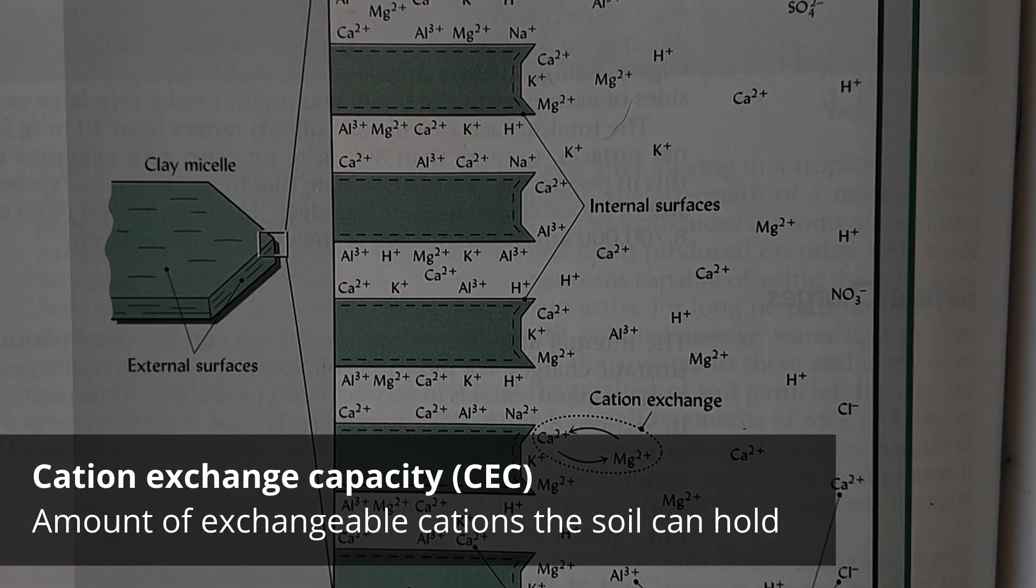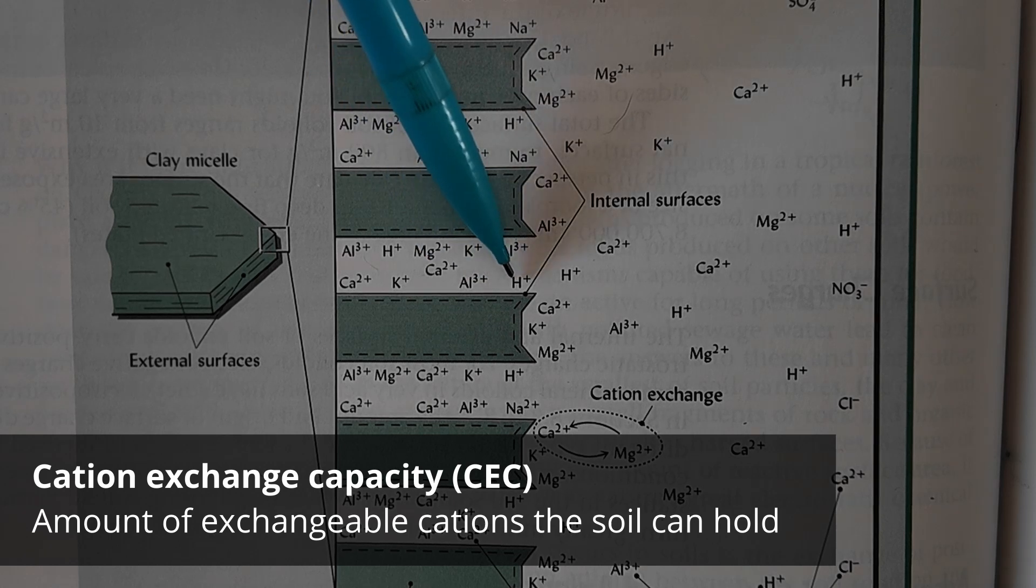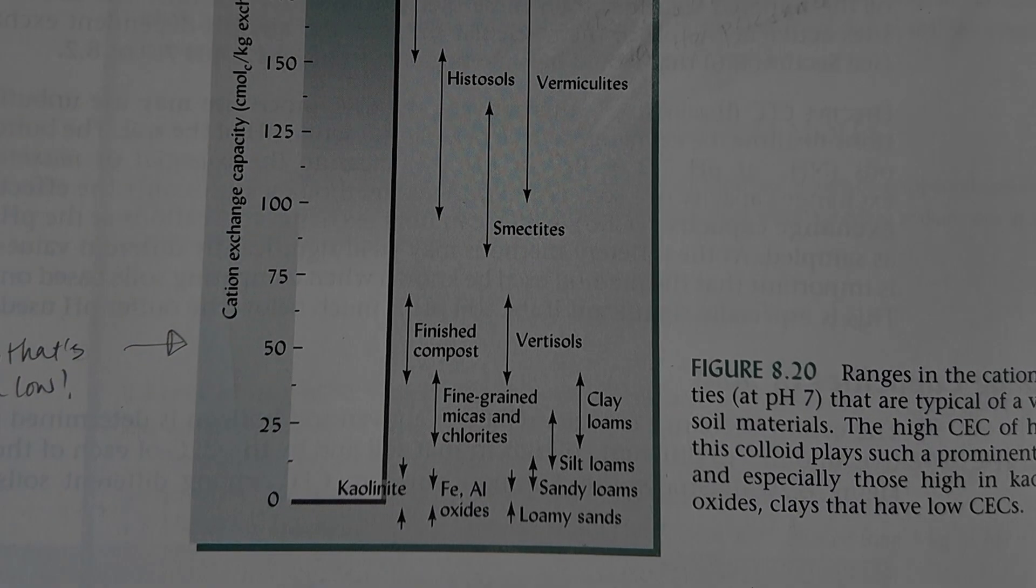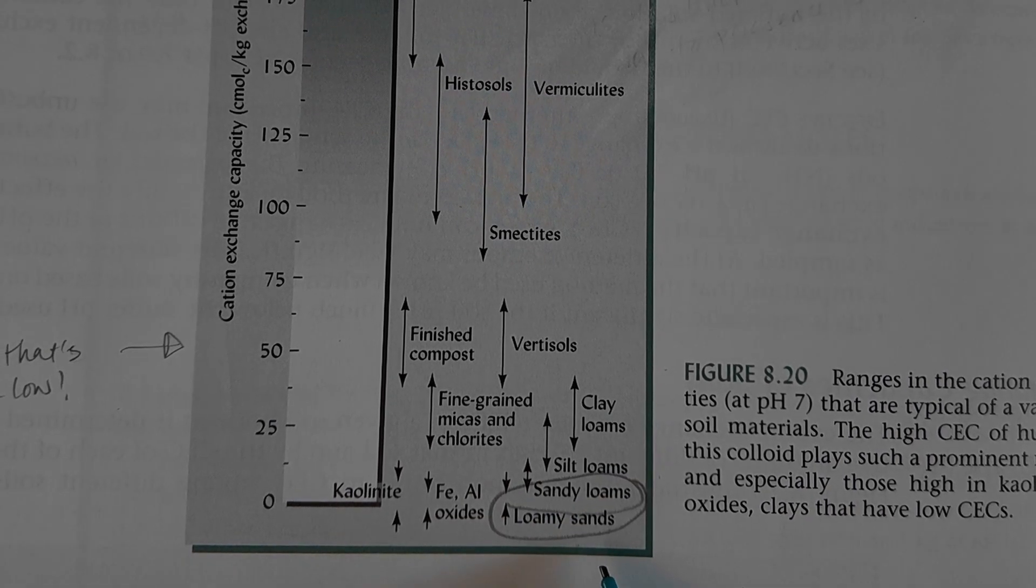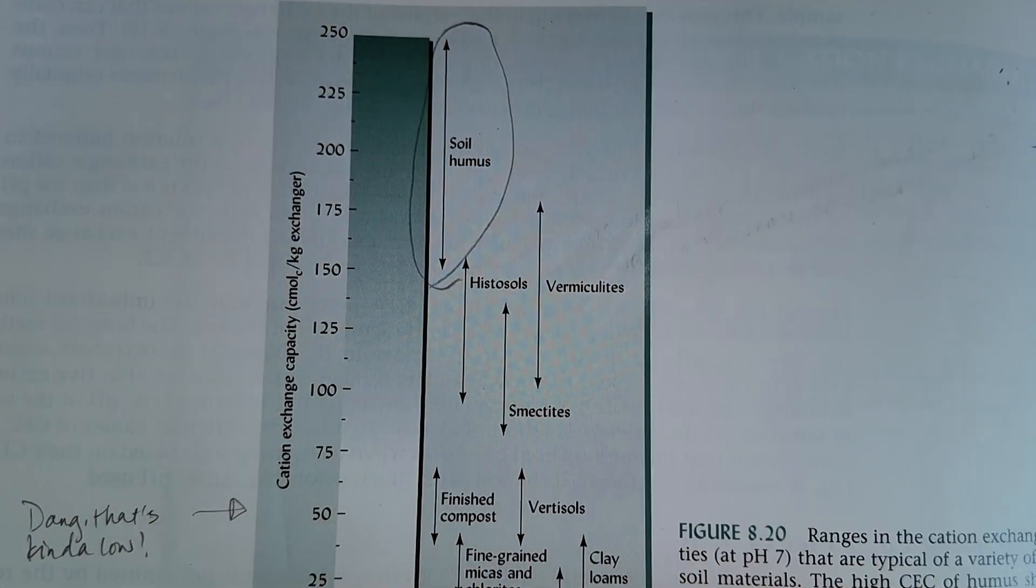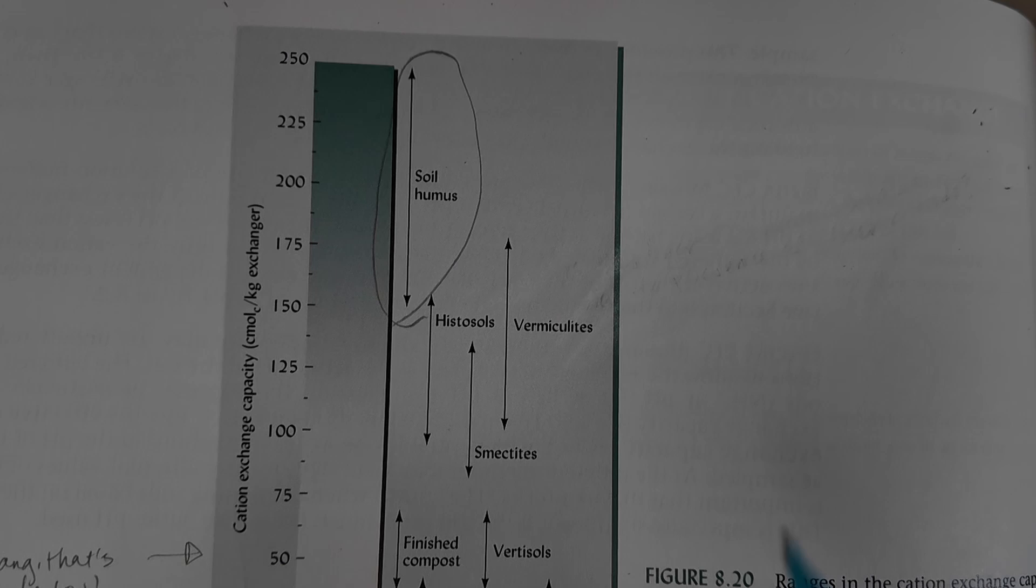The cation exchange capacity is the total exchangeable cations that a soil can hold. You can see in this diagram that sandy soils are all the way at the bottom. They're not able to hold very much. And as you continue going up, humus is the most powerful and has the greatest cation exchange capacity.